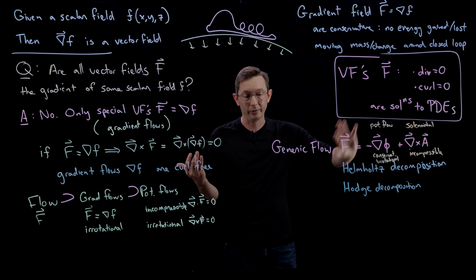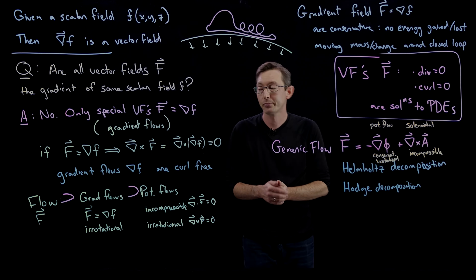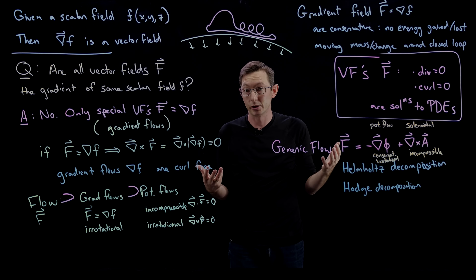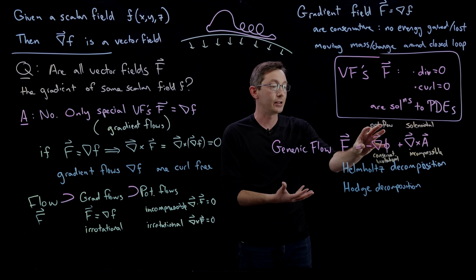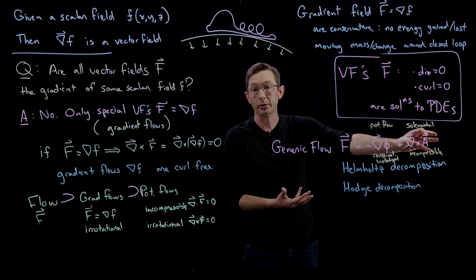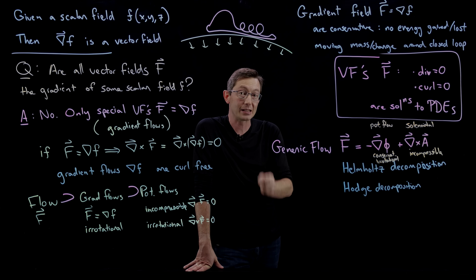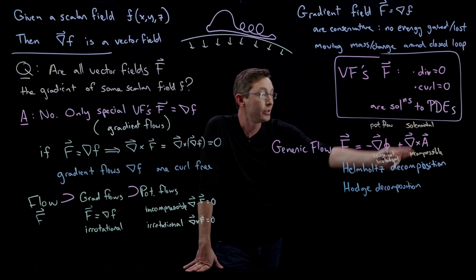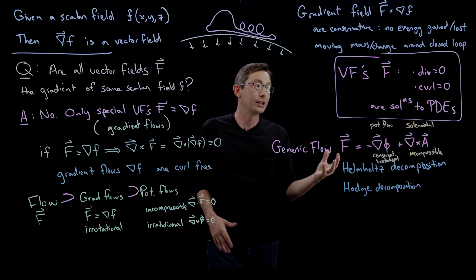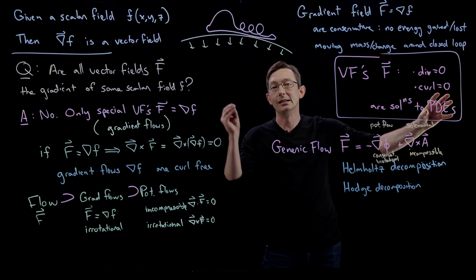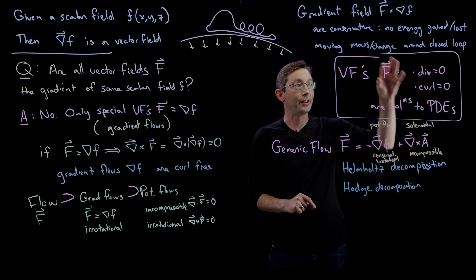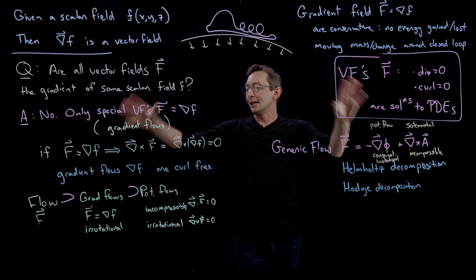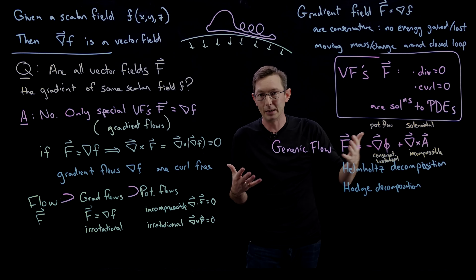The Helmholtz decomposition is really useful across physics — it comes up in electromagnetism, the Navier-Stokes fluid flow equations, and in calculus on manifolds. For example, the incompressible Navier-Stokes equation must produce solenoidal (divergence-free) vector fields. This decomposition helps find solutions and derive PDEs, and is a big field still being worked out, especially for nonlinear PDEs.